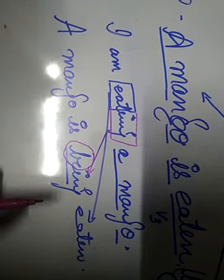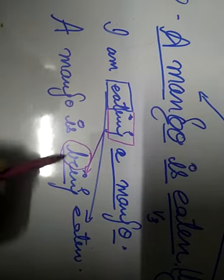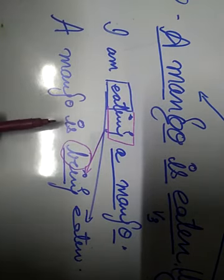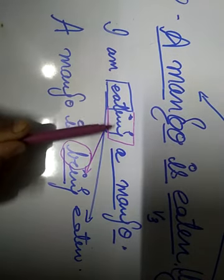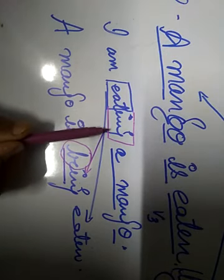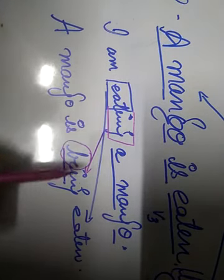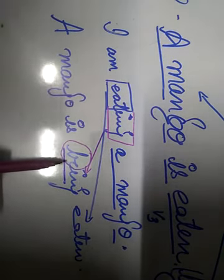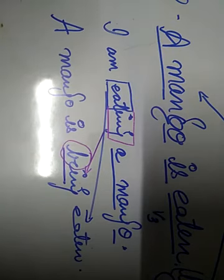As I told you, you need to maintain the tense of the sentence. This is present continuous tense, so to maintain the continuity of the sentence I have used being here. Yeh baat dhyan rakhiye: whenever you find ing in an active sentence, you always use being in passive.